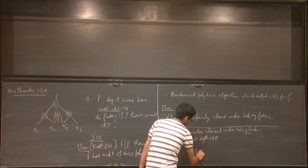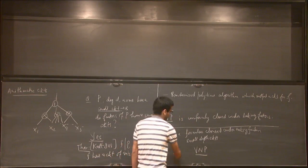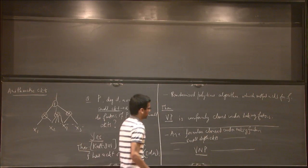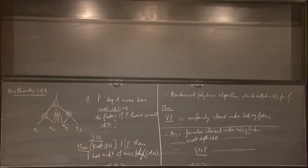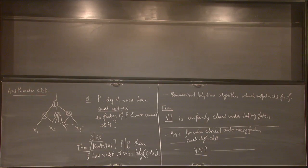Or you could ask the same question for the complexity class VNP — is it closed under taking factors? It's not clear what people believe in the first two cases. For VNP, the story is a bit different.